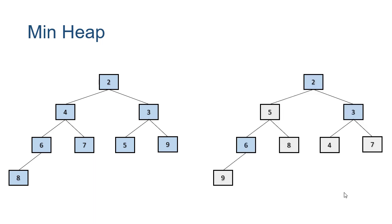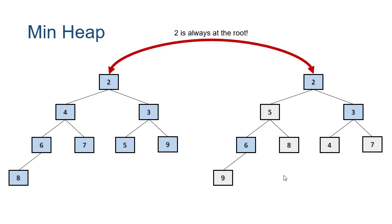Heaps can have different shapes depending on the order that elements are added. Here you can see a valid heap where the gray nodes have elements in different locations than in the previous heap. Four is a child of the root here, even though it's the second smallest element. The ordering is top to bottom so the heap property is maintained — every node contains an element smaller than anything in its subtree. The one consistent thing is that since two is the smallest element, it will always be stored at the root.